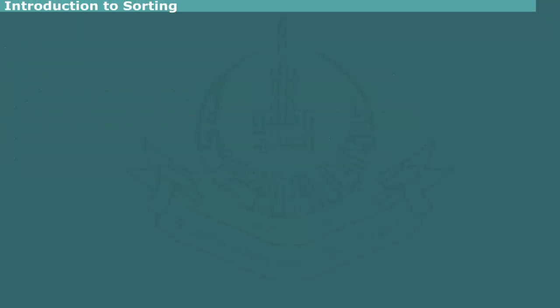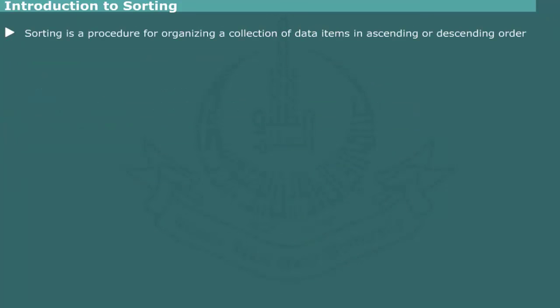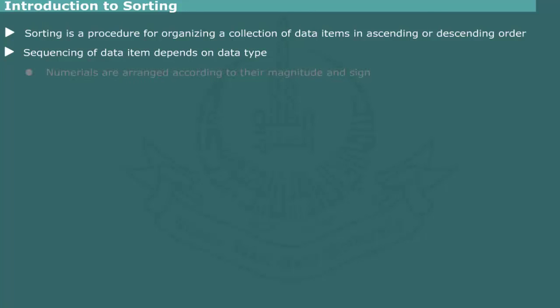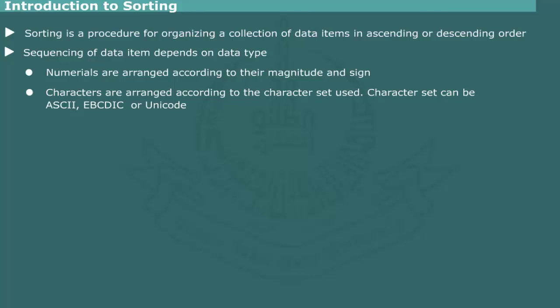Introduction to Sorting: Sorting is a procedure for organizing a collection of data items in either ascending or descending order. The sequence of sorted data depends on the data type of element being sorted. Numeric data are always arranged according to their magnitude and sign. Character or string data are arranged according to the character set used on a particular computer. The correlating sequence for characters can be ASCII, EBCDIC, or UNICODE. ASCII is most commonly used.